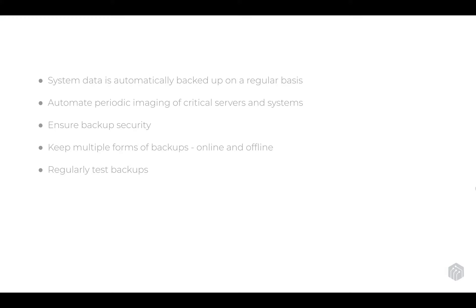Control number 10 is data recovery capabilities. Ensure that system data is automatically backed up on a regular basis, and automate the periodic imaging of critical servers and systems. If you can create images periodically, those become easier restore points and you can add files on top of them. Ensure backup security — backups should be encrypted and stored in a secure environment. Keep multiple forms of backup when possible: have an online and an offline backup. Consider recovery time: if you've got a 10-terabyte server in the cloud with a 20-meg internet connection, restoring from that backup will take a very long time. Finally, regularly test your backups — there's nothing worse than losing data in an incident and realizing backups haven't been working for the last three weeks.